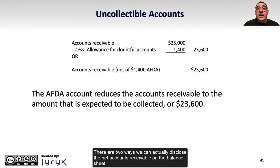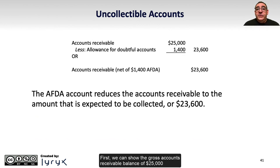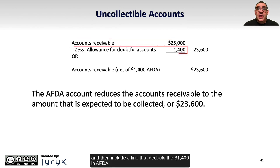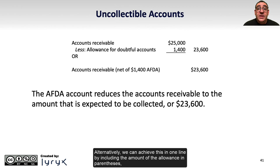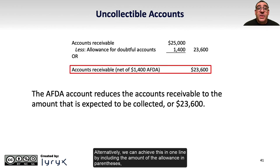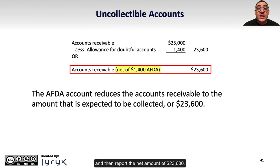There are two ways we can disclose the net accounts receivable on the balance sheet. First, we can show the gross accounts receivable balance of $25,000 and then include a line that deducts the $1,400 in AFDA to report a net balance of $23,600. Alternatively, we can achieve this in one line by including the amount of the allowance in parentheses and then report the net amount of $23,600.